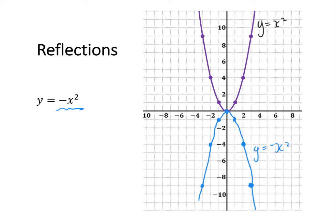You can see my parabola has reflected across the x-axis to sketch the line y equals negative x squared.